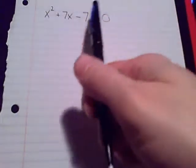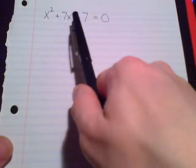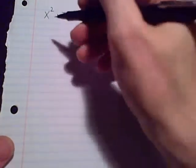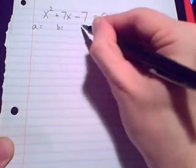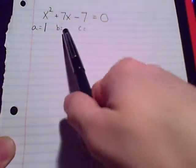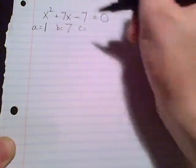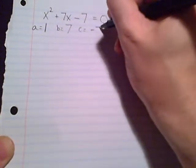Okay, standard form. It must be in standard form. I have all my terms on the left side equal to zero, so I can pick a, b, and c. a is the coefficient on x squared, we've got another just one. b is a positive 7, c is negative 7 this time.